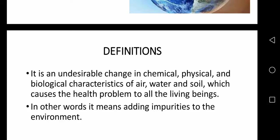There may be various definitions of environmental pollution. The first definition: pollution is the introduction of contaminants into the natural environment that cause adverse effects. Pollution can take the form of chemical substances or energy such as noise, heat, or light. In other words, it means adding impurities to the environment.